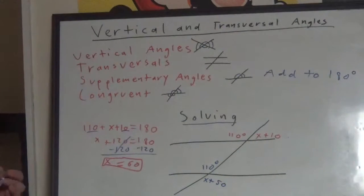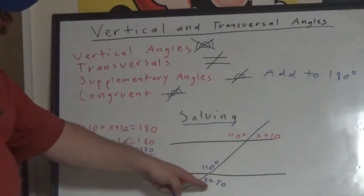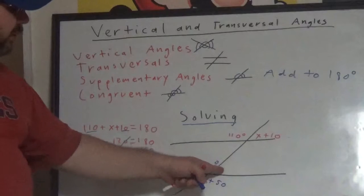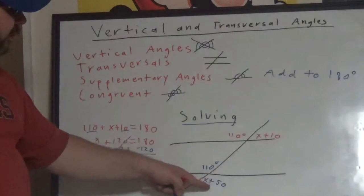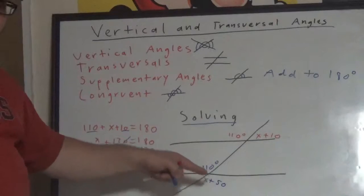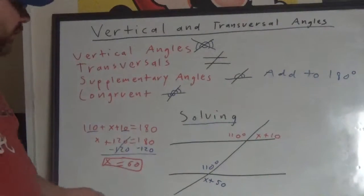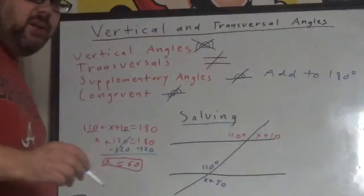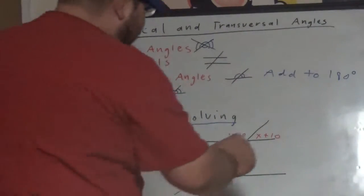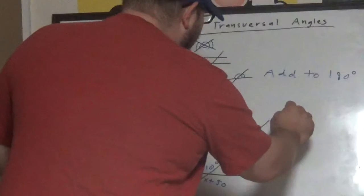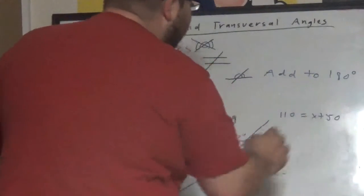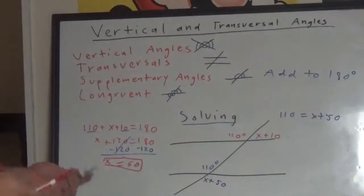Now, we're going to do this problem. Remember, this time they are not supplementary. Now, they are congruent. They're vertical angles and therefore congruent. So, if they're congruent, do we set them equal to 180? No. We set them equal to each other.